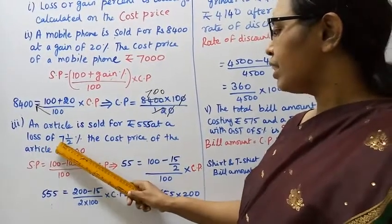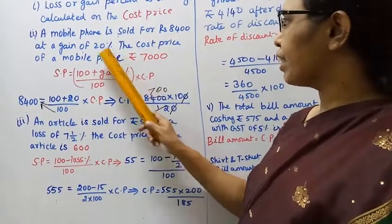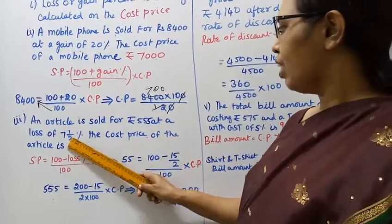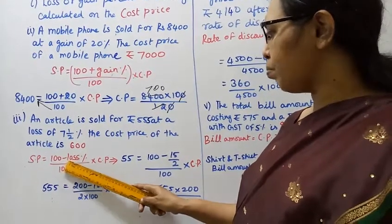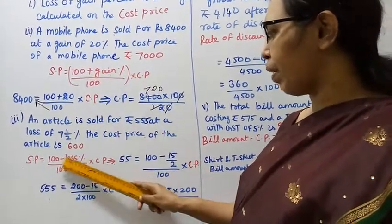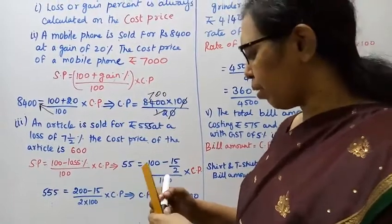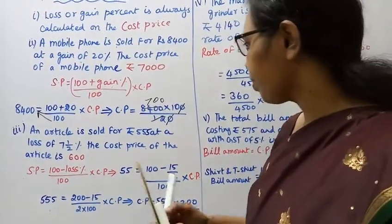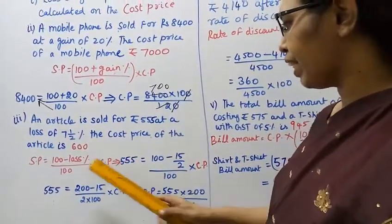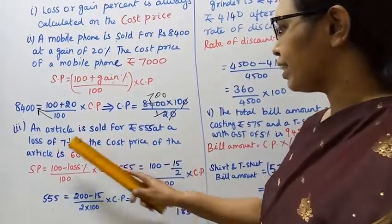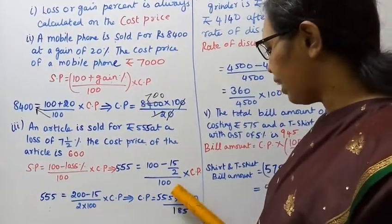An article is sold for Rs. 555 at a loss of 7.5%. The cost price of the article is Rs. 640. Here is loss percent; here it is sold. What is SP? The formula: selling price equals 100 minus loss percent divided by 100, into CP. Selling price is 555. So: 555 equals 100 minus 7.5, that is 15 by 2, divided by 100, into cost price.